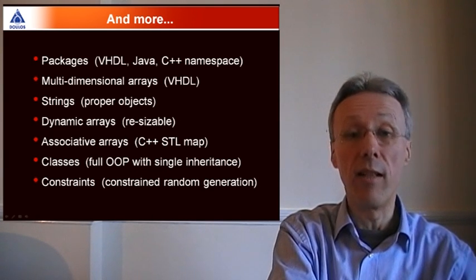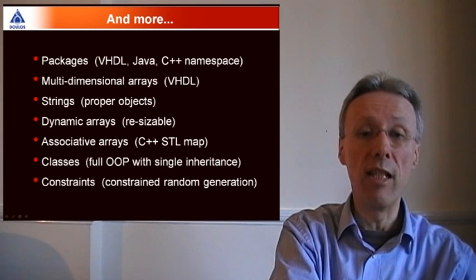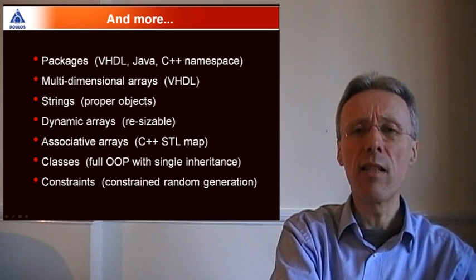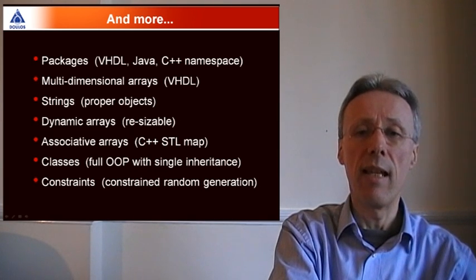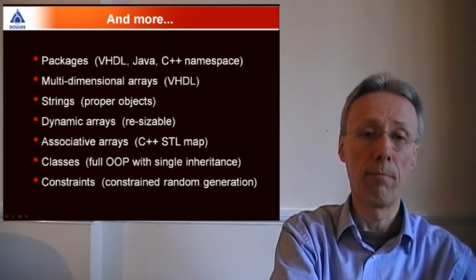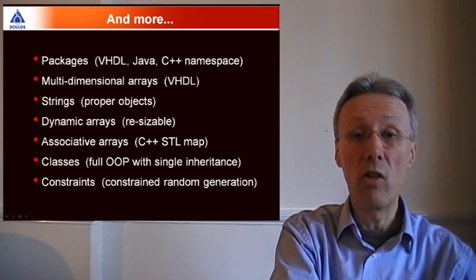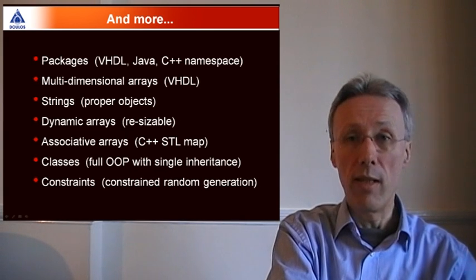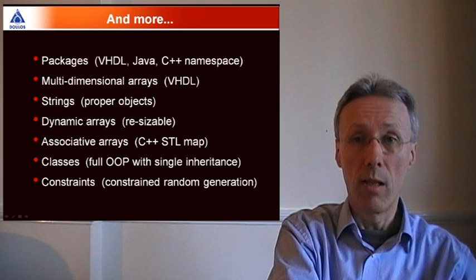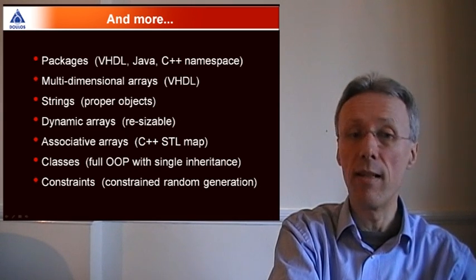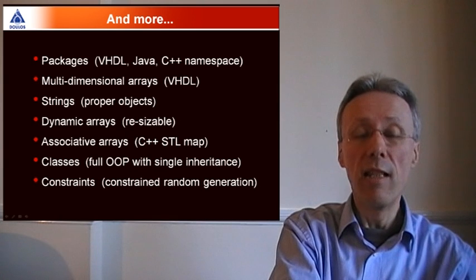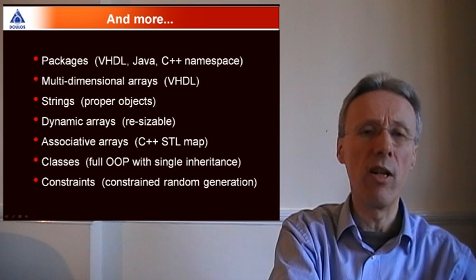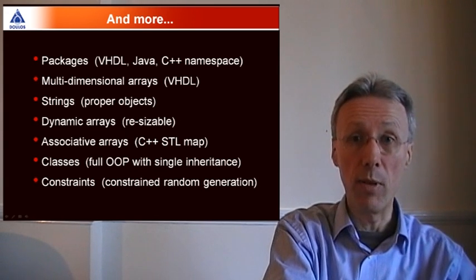SystemVerilog adds dynamic arrays, that is arrays that are resizable at runtime, flexible stretchy arrays if you like. It adds associative arrays, like the C++ STL map or a Perl hash. And furthermore, SystemVerilog adds classes, meaning a full object-oriented programming language with single inheritance. So that's a very significant addition to Verilog and to C. And then finally, SystemVerilog adds constraints to support full constrained random generation, although a discussion of that is outside the scope of this particular video.